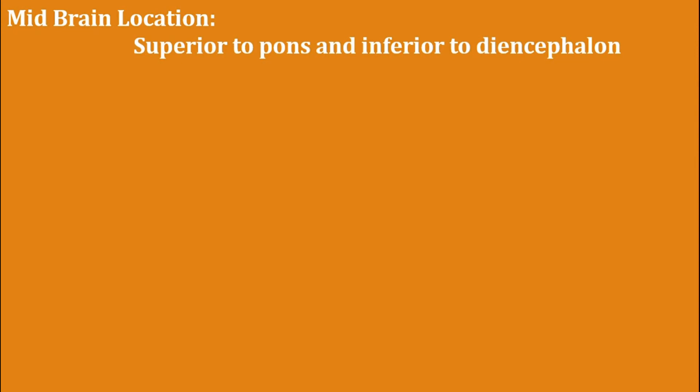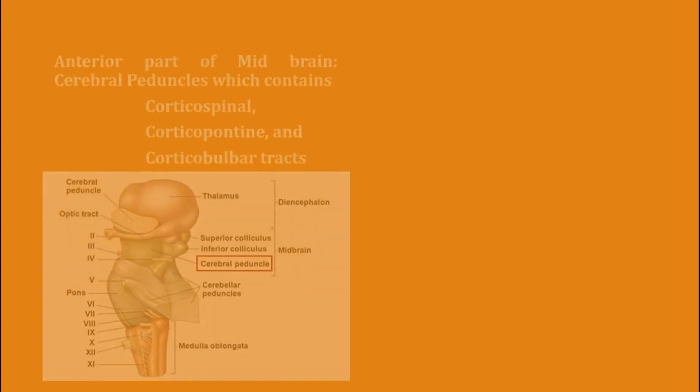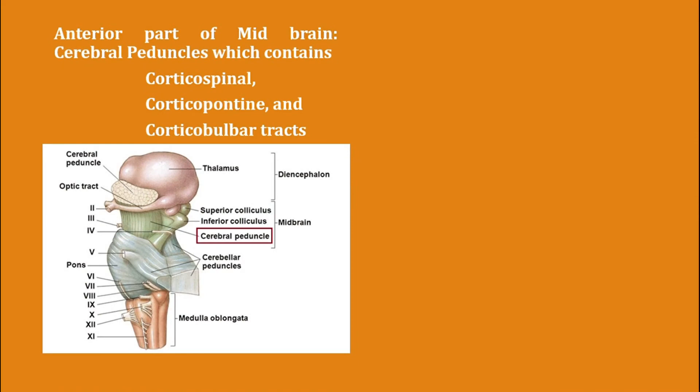Midbrain is located superior to pons and inferior to diencephalon. The anterior part of midbrain is formed by the cerebral peduncles, which contains corticospinal, corticopontine, and corticobulbar tracts.